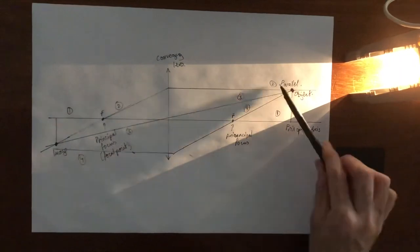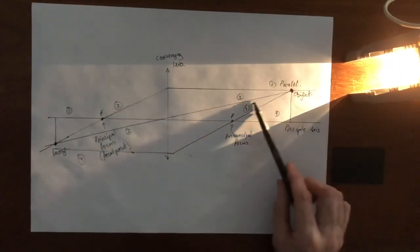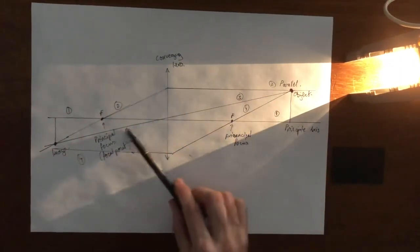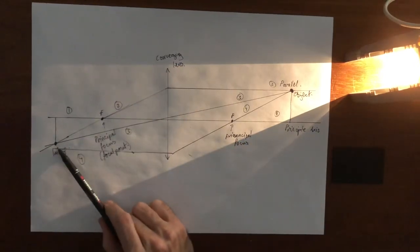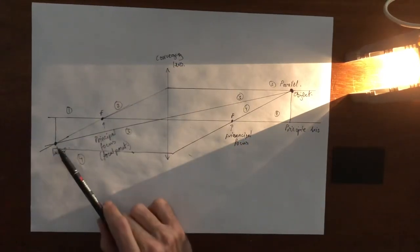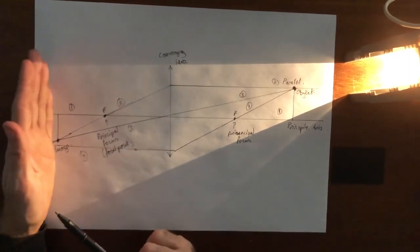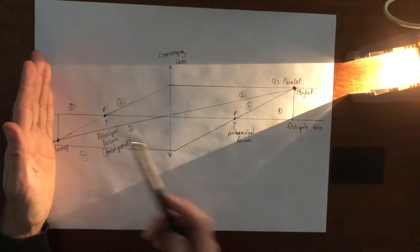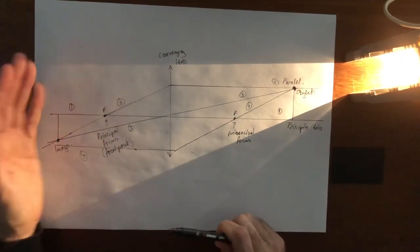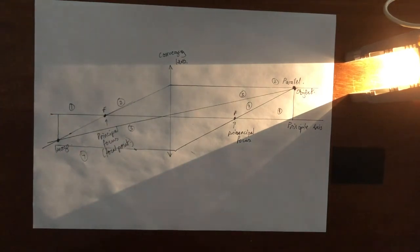The image is formed where the actual rays meet. It's a real image — so if I had a screen there, I would actually be able to see whatever this object is and project it onto the screen. It's also inverted. And that's how you find the position of an image in a converging lens.